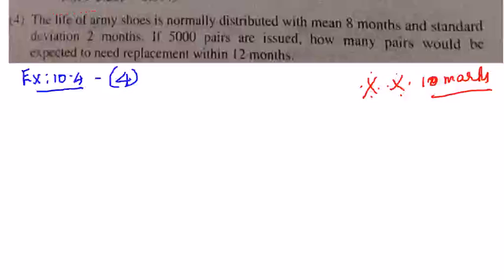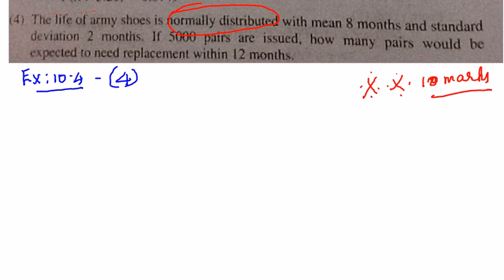This is a very important 10-mark problem — you would have seen it in many public papers and also in your school exams. It's a very simple sum: a direct application of the normal distribution formula. The life of army shoes is normally distributed with mean equal to 8 months and standard deviation equal to 2.